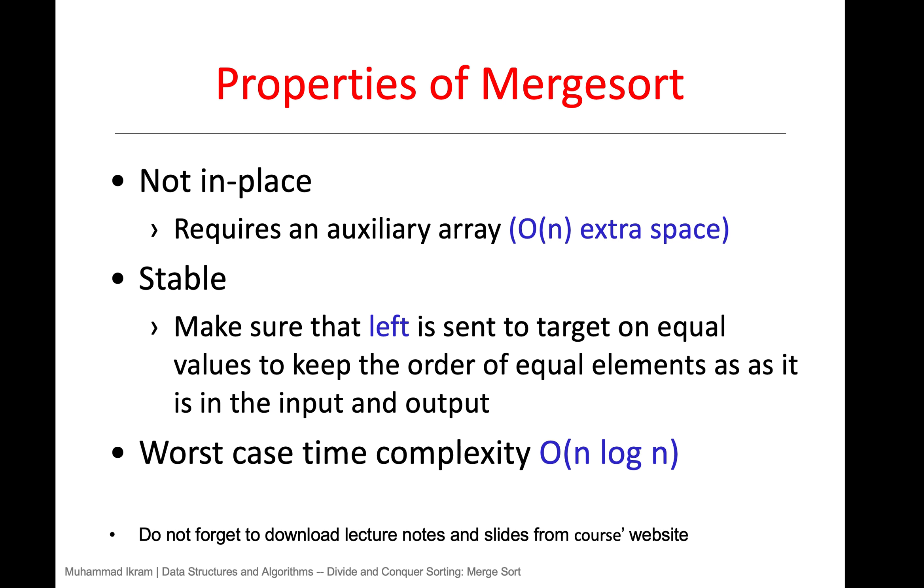Here are some properties of merge sort. It is not in-place sorting, which means we need an auxiliary array to get the sorted array. So the space complexity of merge sort is O(n). It is stable, meaning that equal elements remain in the same order in both unsorted and sorted arrays.